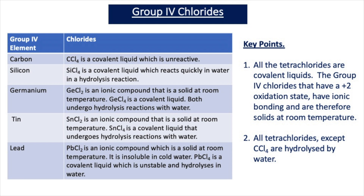Germanium forms two chlorides: GeCl2, which has the oxidation state plus 2, and GeCl4, where germanium is in the plus 4 oxidation state. GeCl2 is an ionic compound — it consists of ions held in a giant structure, a crystal lattice — and therefore it has a high melting point and is a solid at room temperature.